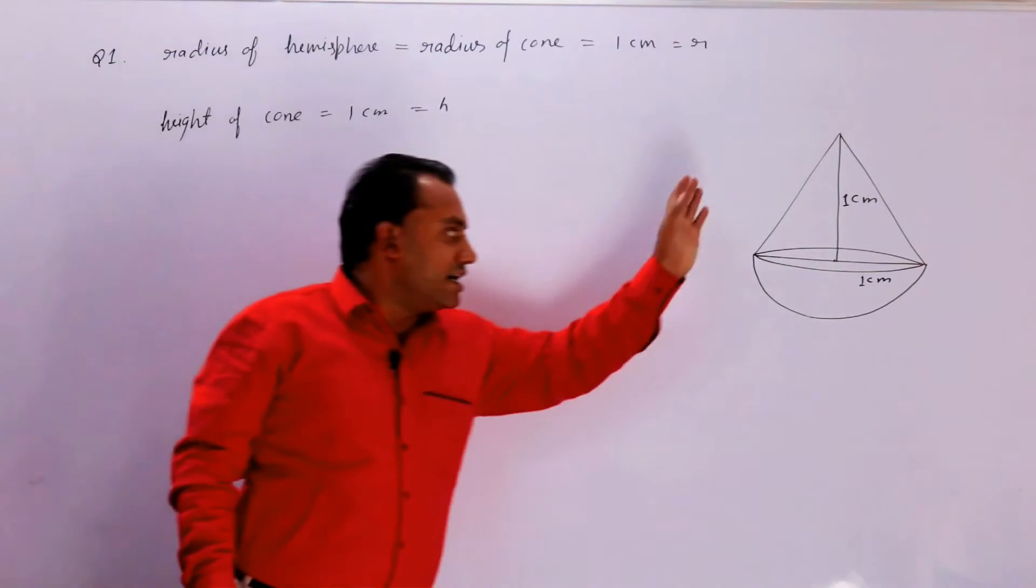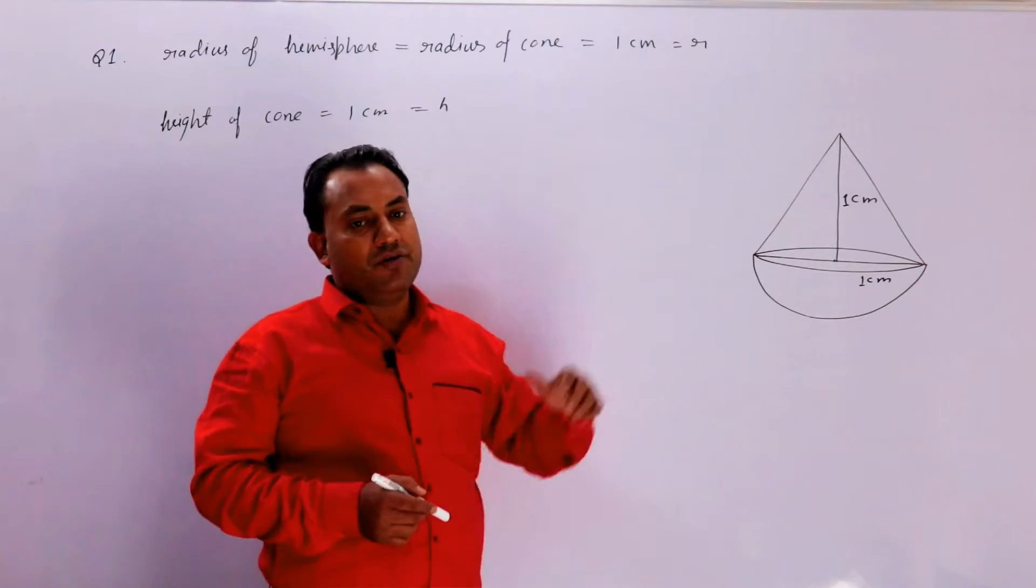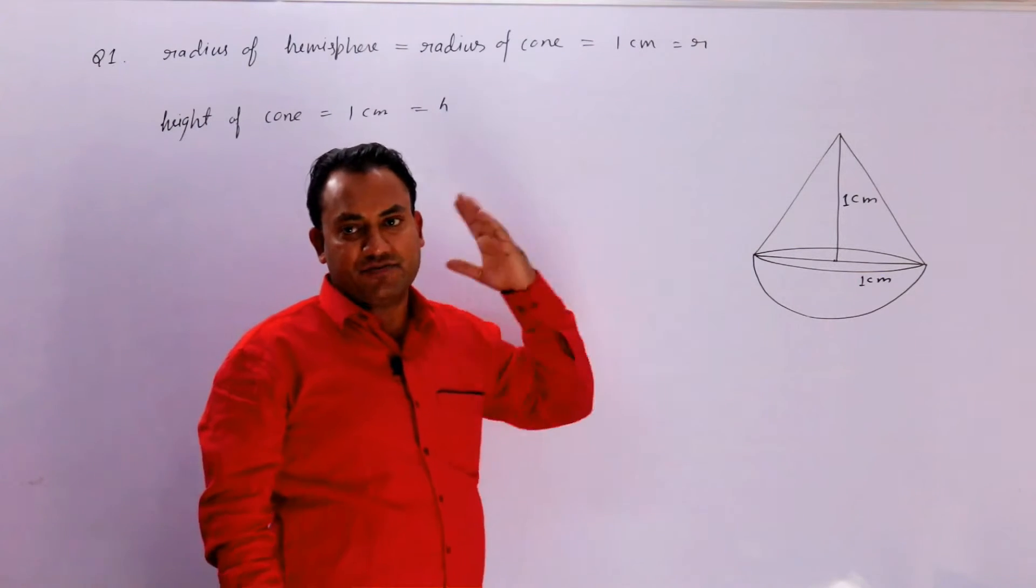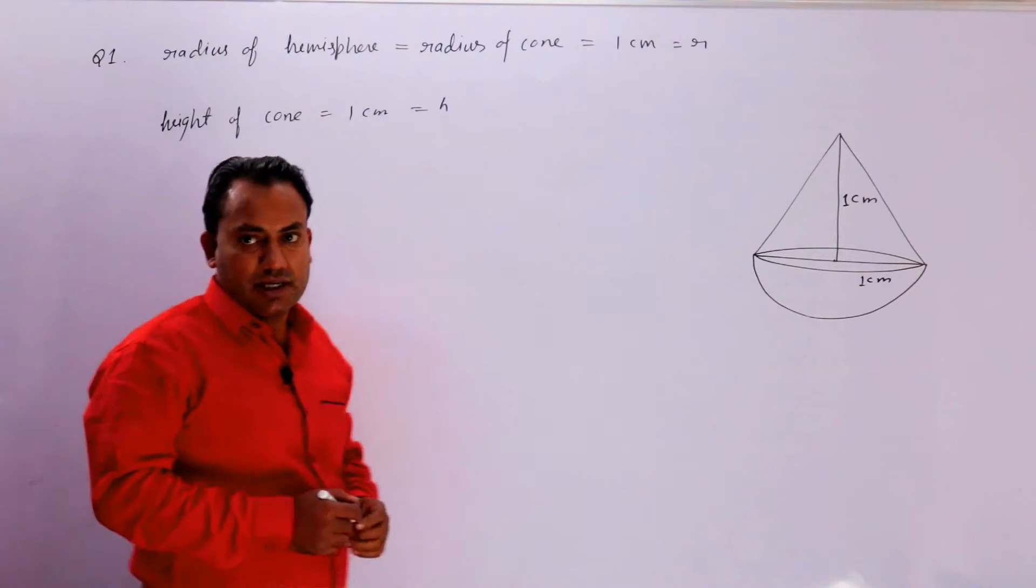आपको इस solid का volume बताना है. तो volume of solid is equal to volume of cone plus volume of hemisphere. और इनके formula हम use करेंगे.